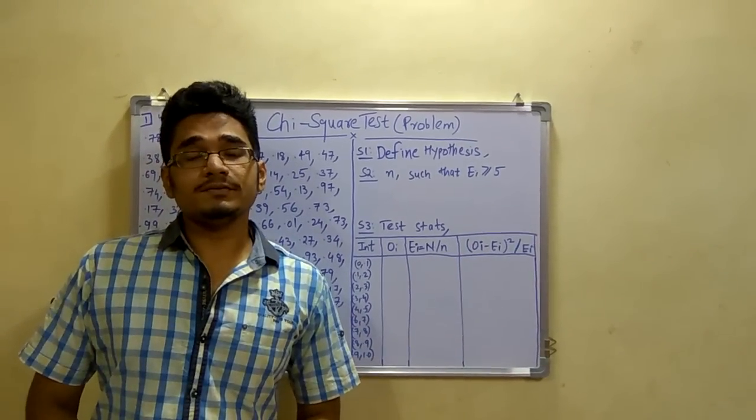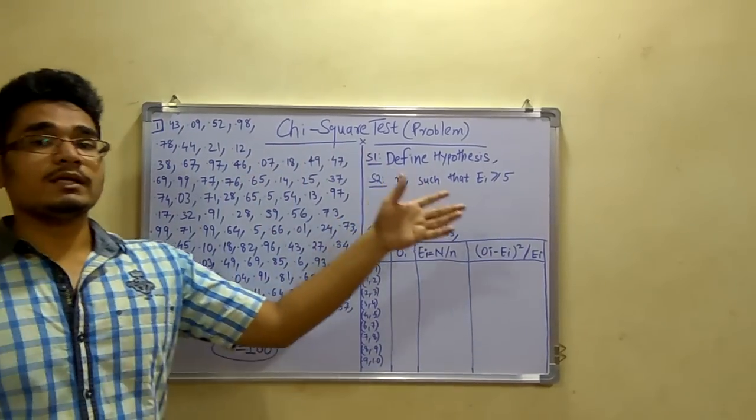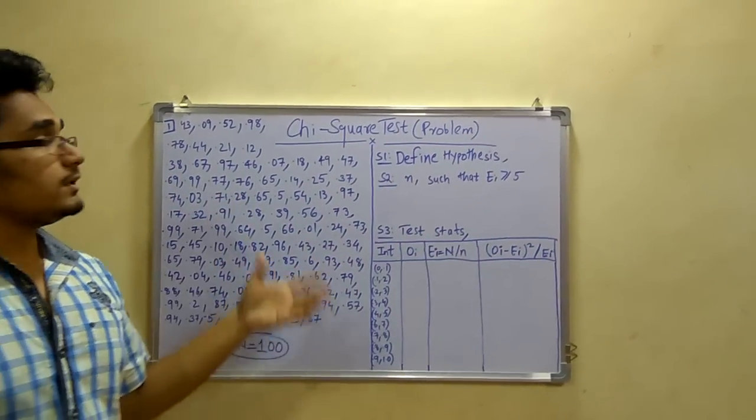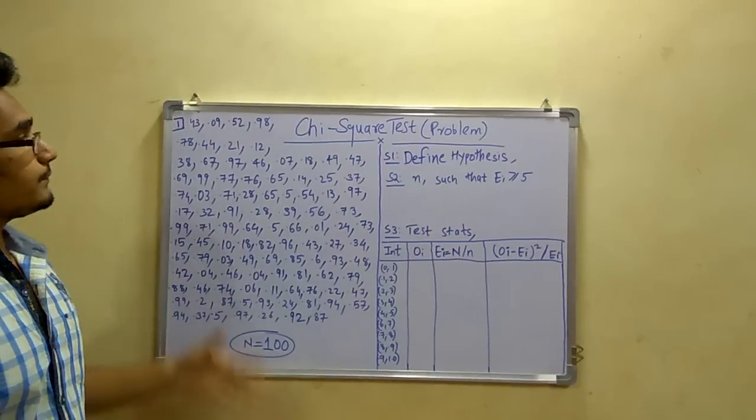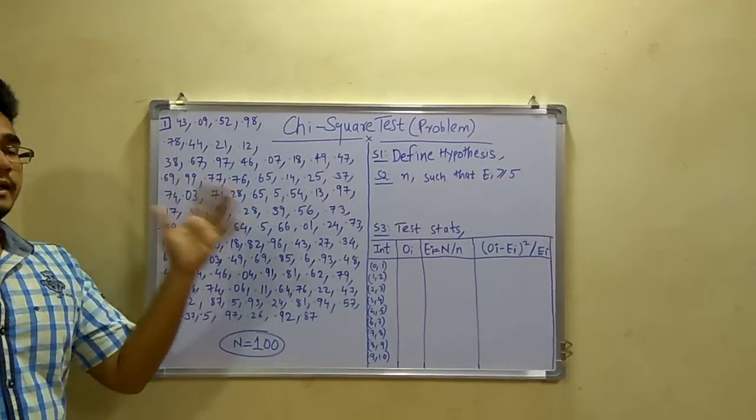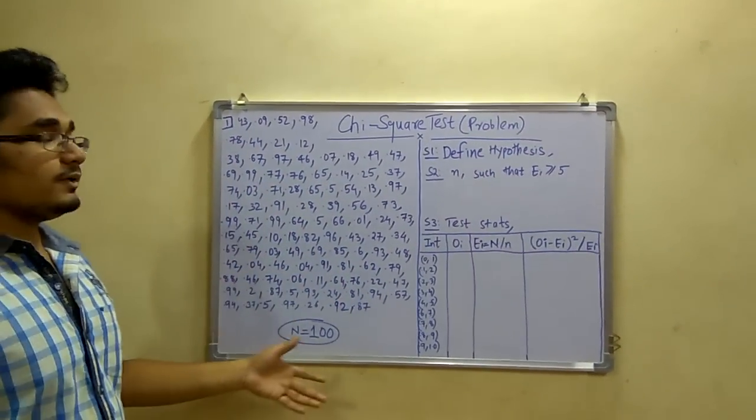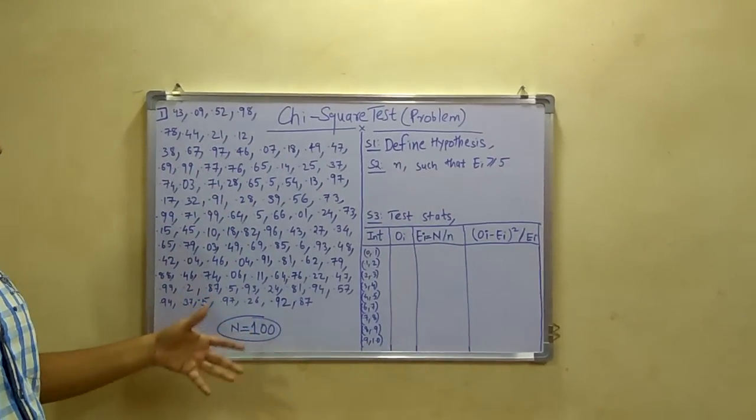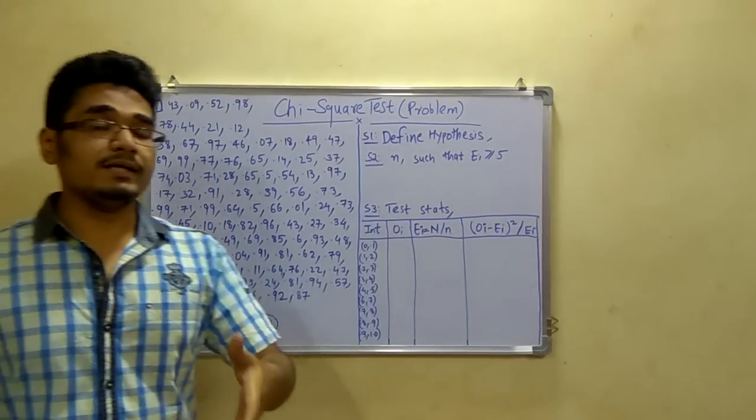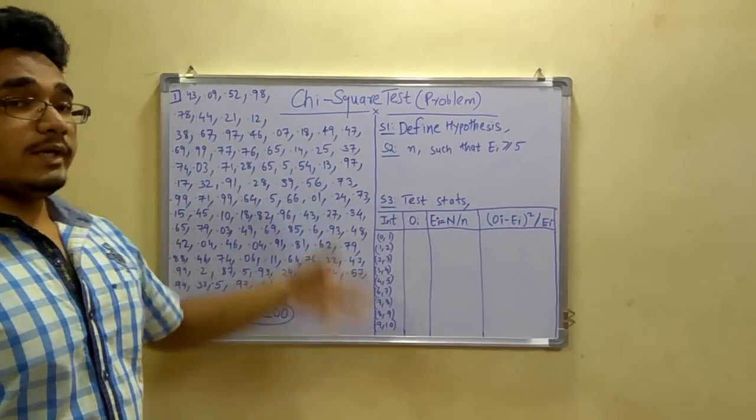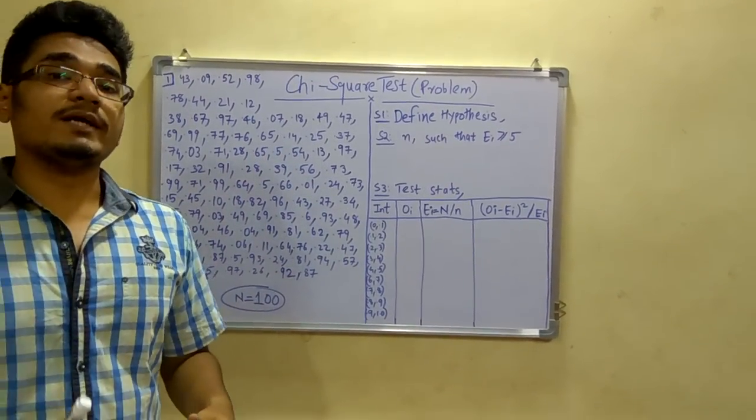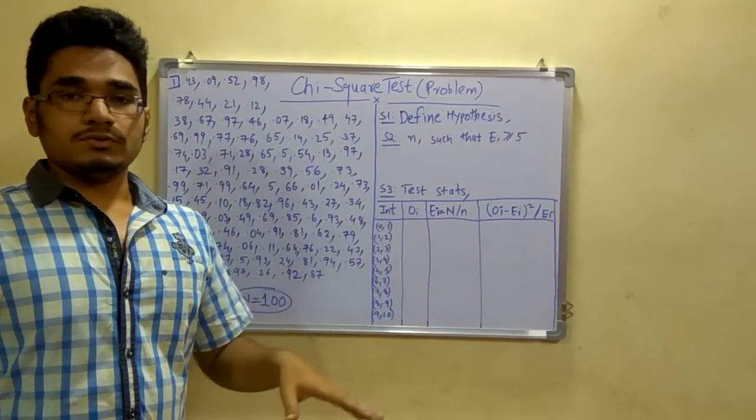This is Ranjiraj. In my previous video I taught you about the chi-square test algorithm. Now in this video we'll be talking about the problem of chi-square test. These are the hundred numbers as you can see here. You can count it later, but for time being these are the hundred numbers. Now in the question they have said that you have to calculate this problem using the chi-square test with the level of significance alpha as 0.05. So let's get started.